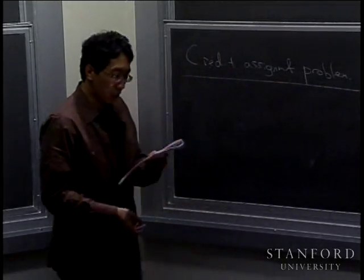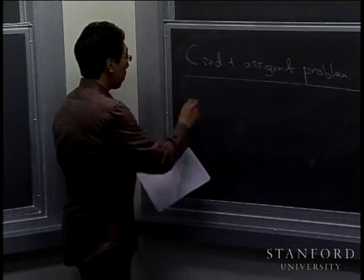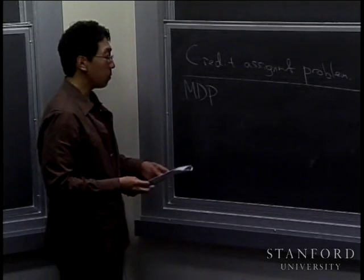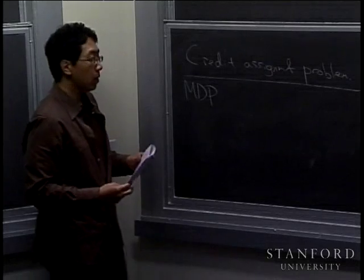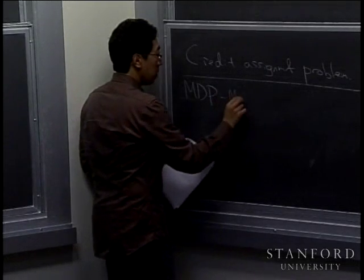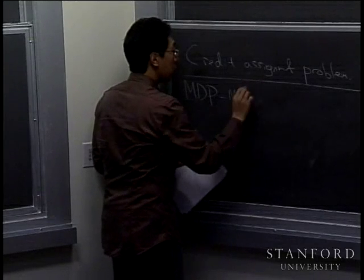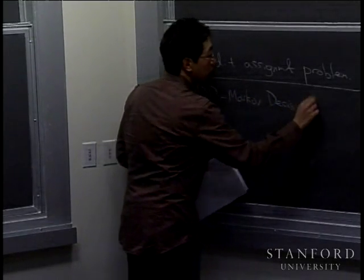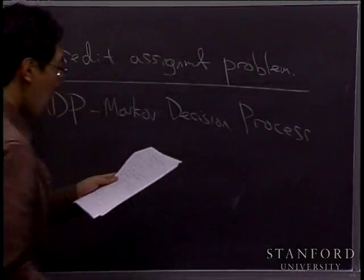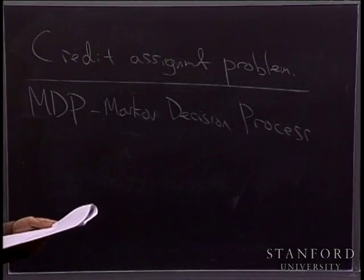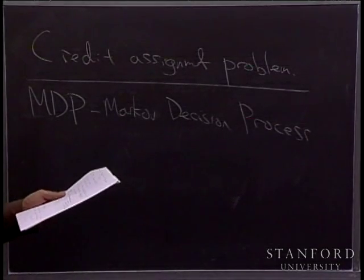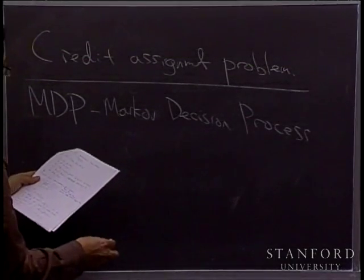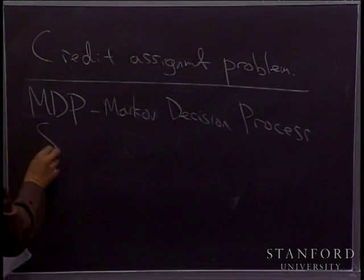Reinforcement learning problems model the world using something called the MDP, or Markov Decision Process formalism. An MDP is a 5-tuple comprising five things.